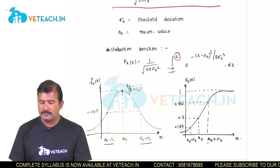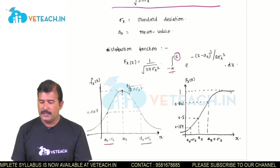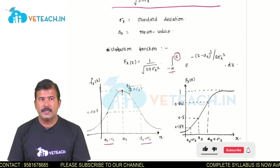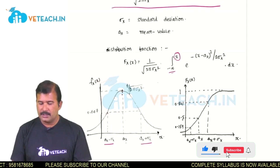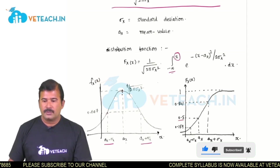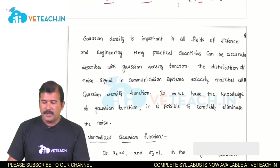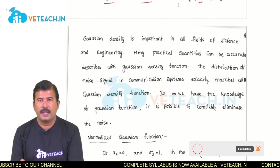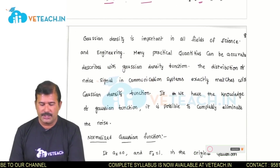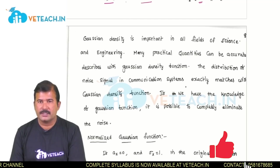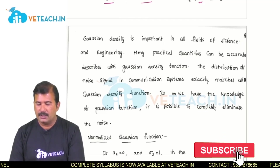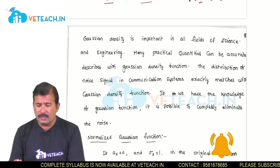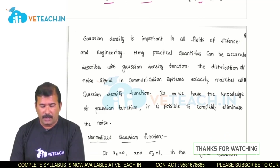Coming to the distribution function, it is a gradually increasing function and at the mean value, that is at x equals to Ax, the distribution function value is 0.5. Many practical quantities can be accurately described with the Gaussian density function. The distribution of noise signals in communication systems exactly matches with the Gaussian density. If we have knowledge of the Gaussian random variable, we can completely eliminate the noise from communication systems.